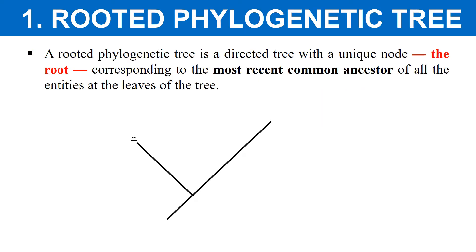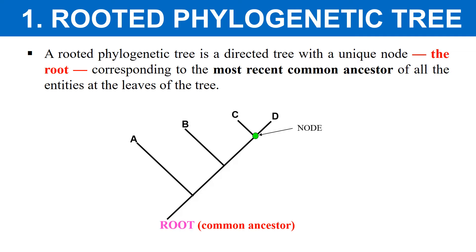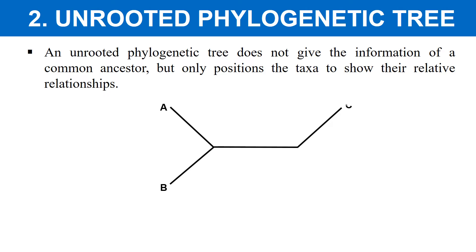The rooted tree has a common root which gives us information about the ancestor. This root shows the information about the ancestor of all four species A, B, C, D. So by the rooted tree, you get information about the common ancestor of all the species. While the unrooted tree does not give information about the common ancestor — it does not have a root. Species A, B, C, D are present but there is no root in the tree, so you cannot find the common ancestor. This unrooted tree only gives information about the present day species.